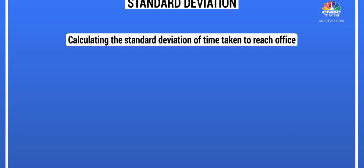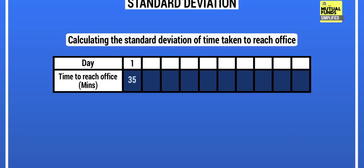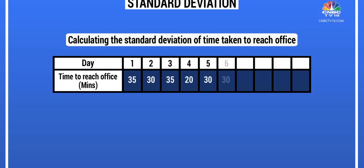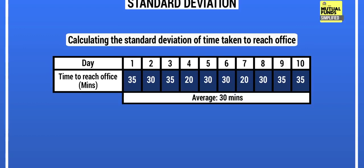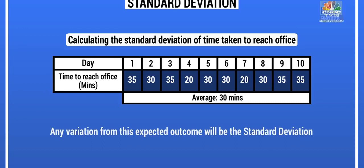Let me give you an example. Say you want to calculate the standard deviation of the time it takes to reach your office. On day one you took 35 minutes, day two 30 minutes, day three 35 again, day four 20 minutes, and so on for 10 days. If you calculate the average across those days, you'd arrive at 30 minutes — which is the expected time to reach office on any given day.